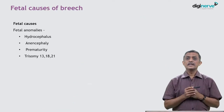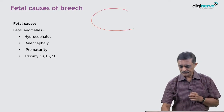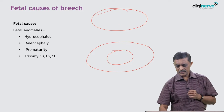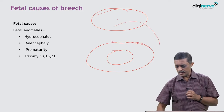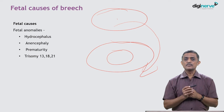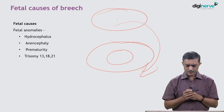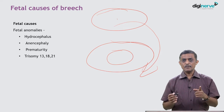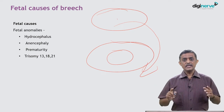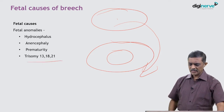Fetal causes: in hydrocephalus, the head becomes larger compared to the breech, so the smaller breech sits comfortably in the lower pole while the hydrocephalic head sits at the fundus. Anencephalic babies can also present with breech. Prematurity — premature babies have a head-to-body ratio greater than one; as the baby matures the head becomes smaller and compact. Trisomy 13, 18, and 21 can also present with breech.